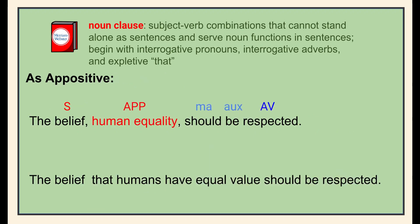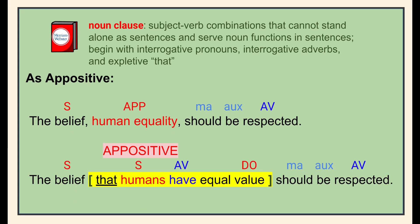In the first sentence, the appositive 'human equality' comes immediately after the noun it renames: 'belief.' Remember, nouns and their appositives are never separated by verbs. In the second sentence, the noun clause 'that humans have equal value' is acting as an appositive — it renames 'belief,' not describes it. A quick way to check whether a clause is a noun appositive or an adjective is to insert 'is' or 'which' at the beginning: 'The belief is that humans have equal value' makes sense, whereas 'the belief which humans have value' does not — so we know it's a noun appositive renaming 'belief.'